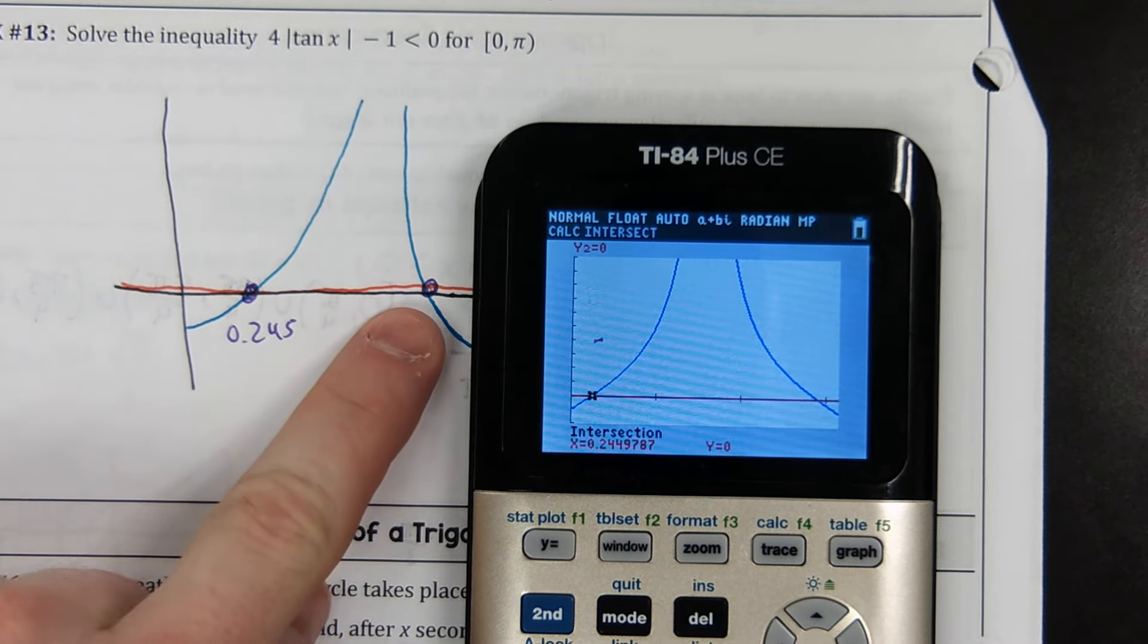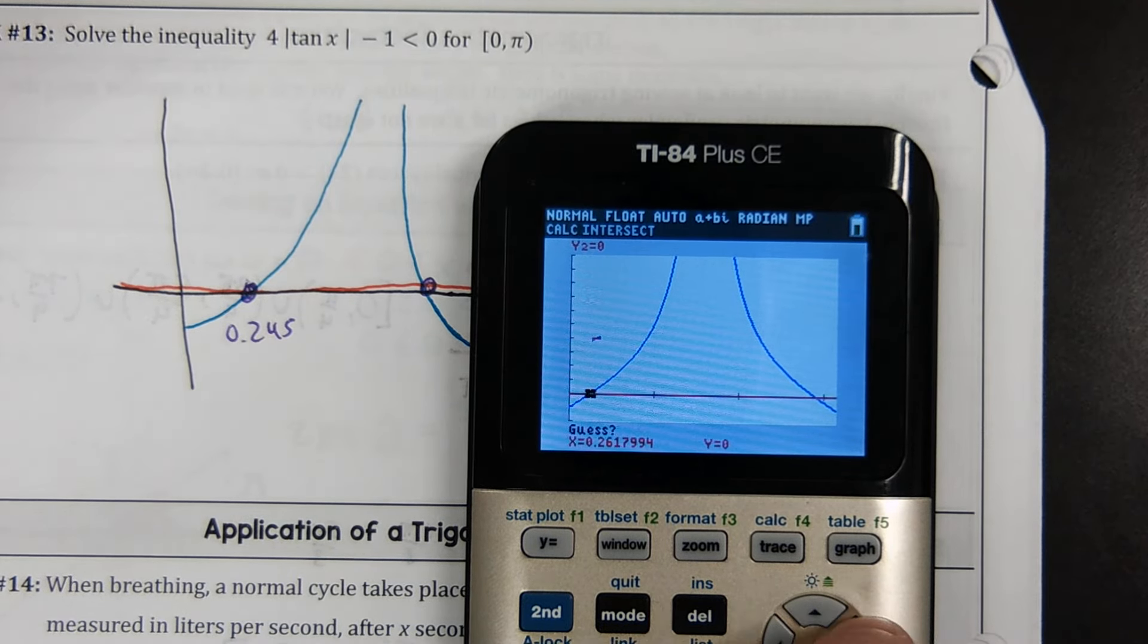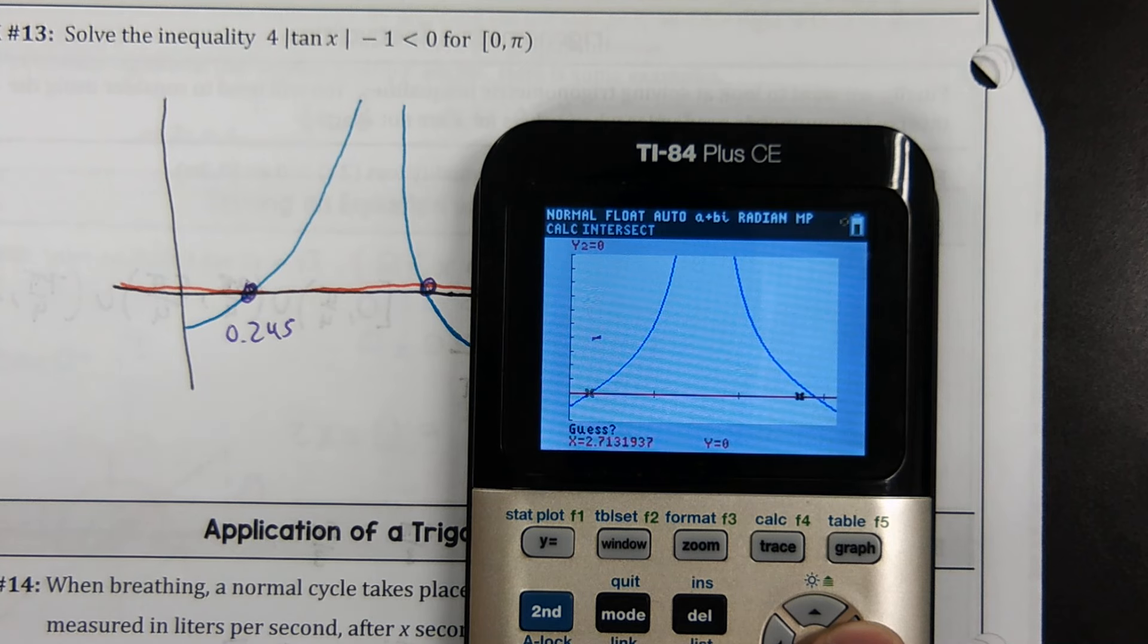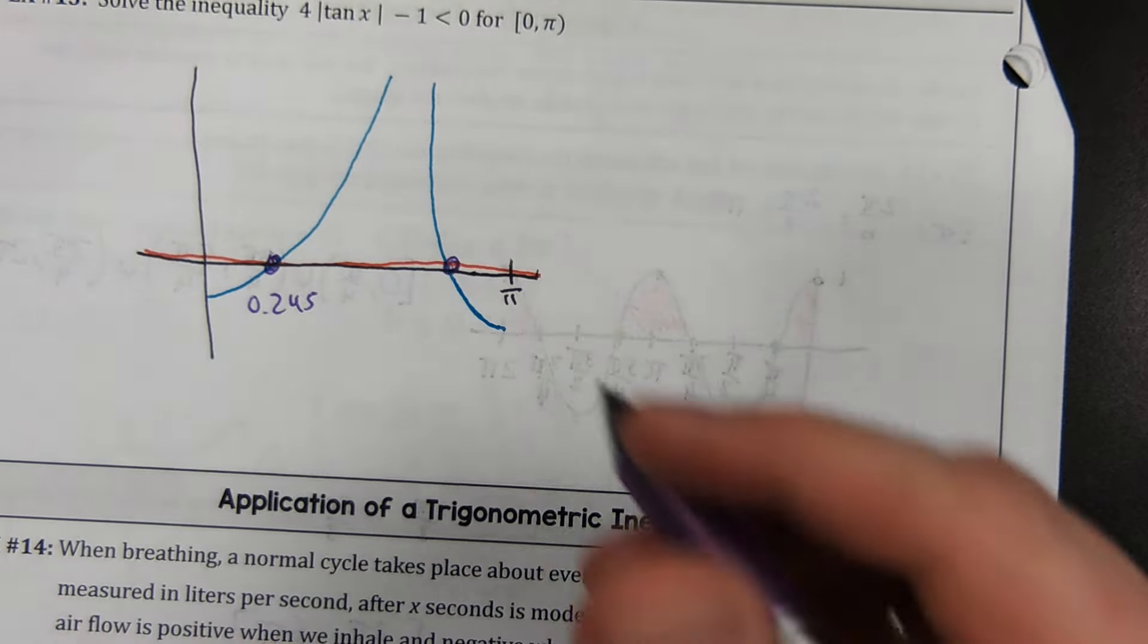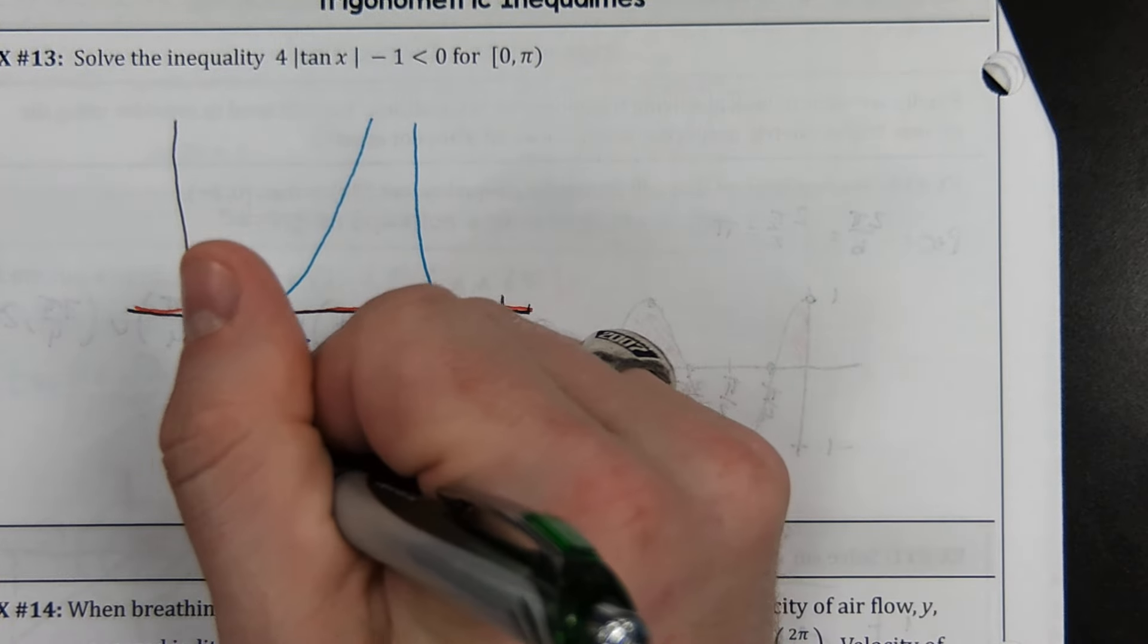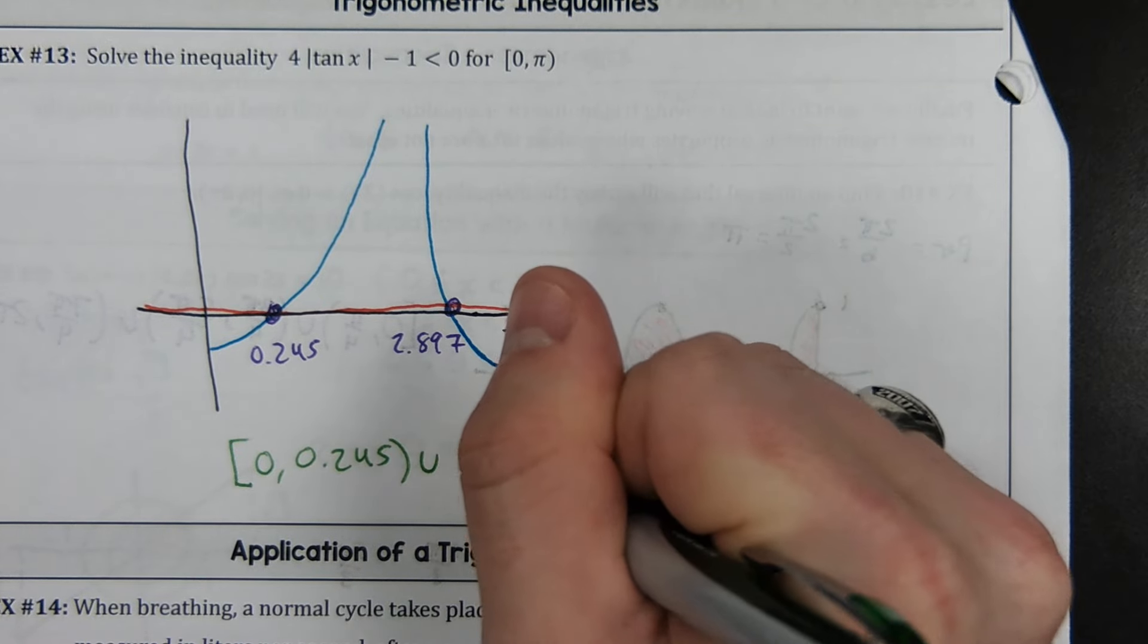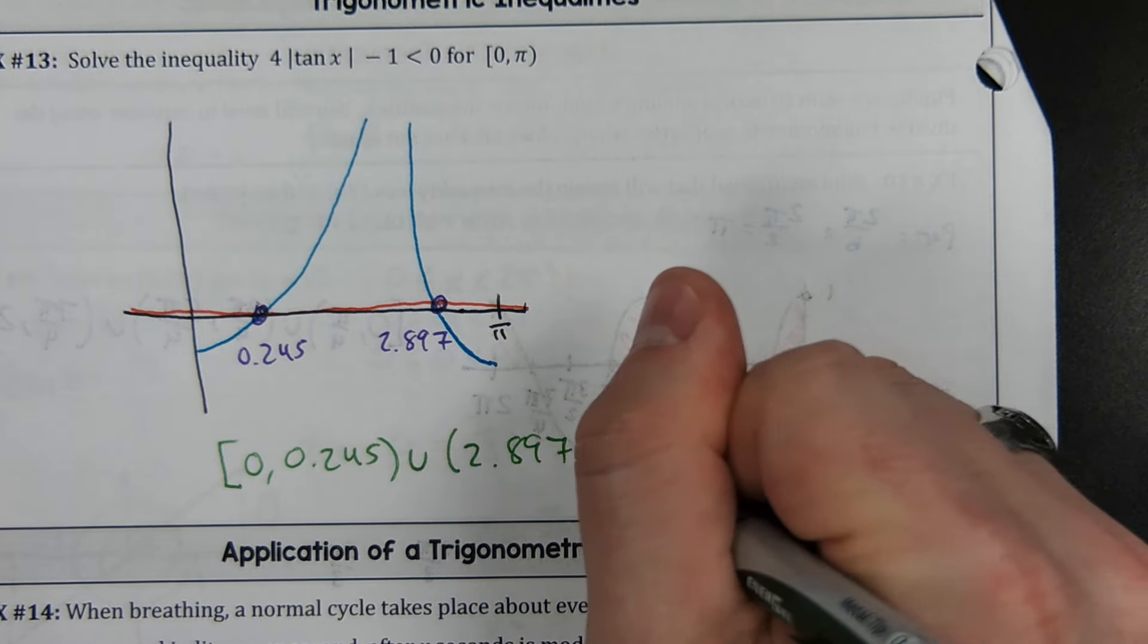And we're going to do the same thing to find the other answer. Second trace 5, enter, enter. And then hold down the right arrow for a little while. It's going to take a little while. It's got to go pretty far. And hit enter one last time. 2.897. So we were trying to figure out where we're below 0. So those answers are going to be from and including, because it has a bracket on it, 0, up to 0.245.